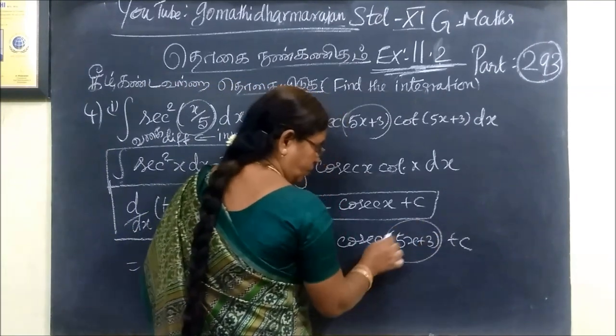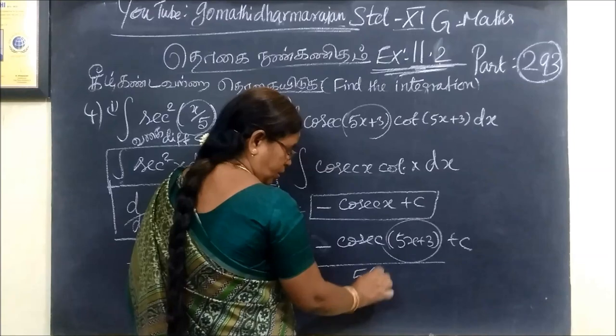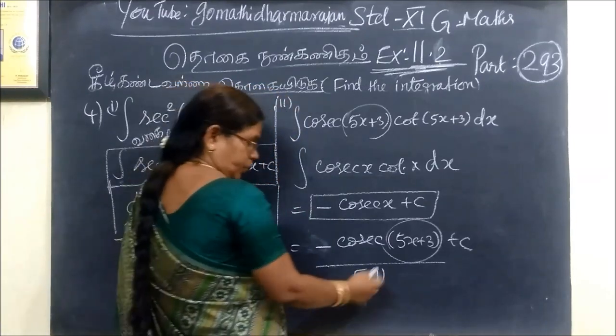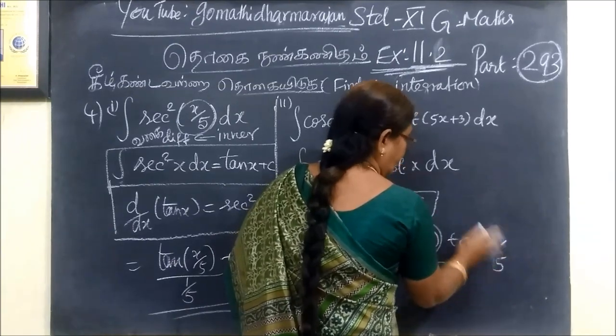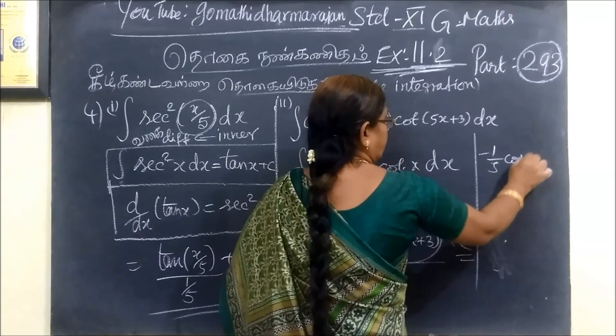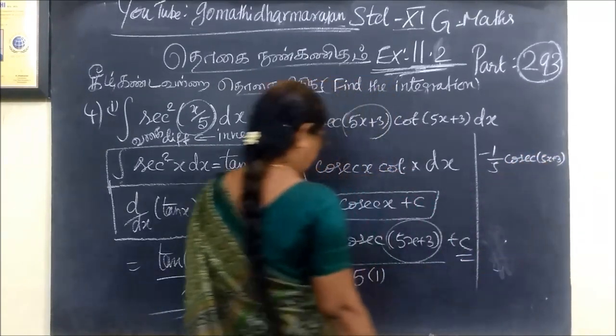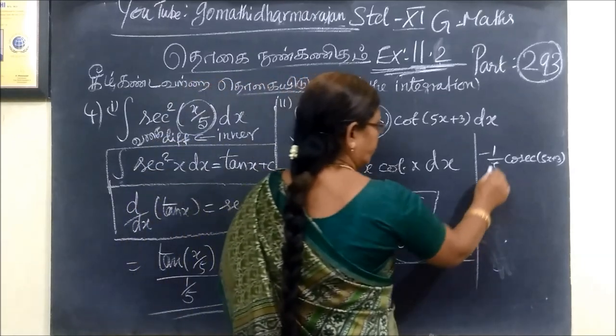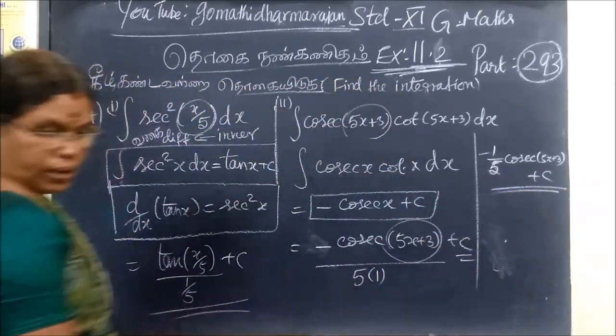So, this is inner function. Differentiate together. 5x differentiates to 5, and 3 is constant. So, answer is minus 1 by 5 cosecant of 5x plus 3. This is the answer for this.